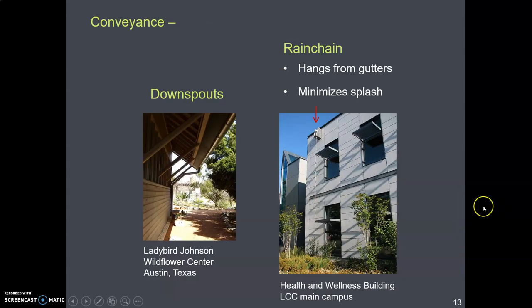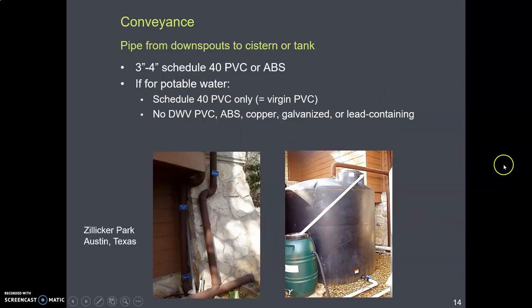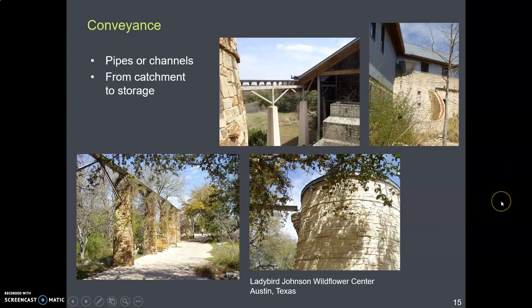That's the trick — maintain the slope. You can use downspouts to collect water out of the gutter and direct it somewhere. You often see something called a rain chain, used instead of a downspout to direct rainwater off the roof. This one here is a chain at the Health and Wellness building on the LCC campus. Here are some utilitarian-looking pipes, and here are more channels at the Lady Bird Johnson Wildflower Center.